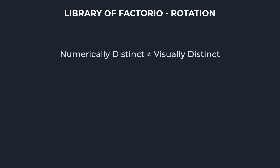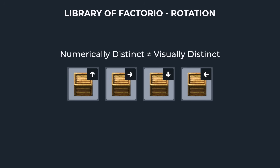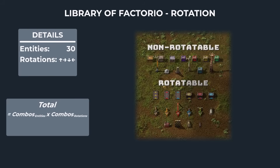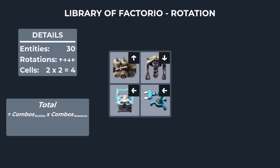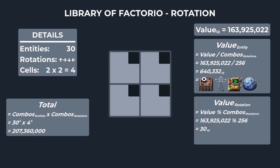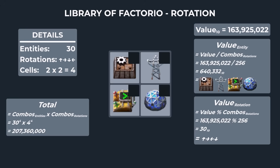One thing you may have realized is this method will generate some duplicates when translated to Factorio. For instance, the wooden chest is not rotatable, so multiple values will produce the same result even though they are numerically distinct. This is also true for the empty cell and any other non-rotatable entity, so there will be some duplicates — but that is a small price to pay to guarantee all possible factories are able to be generated. To expand beyond a single cell, the math is exactly the same; we just need to adjust the total combinations. For a two by two grid, we would have 30 to the 4th total entity combinations and 4 to the 4th total direction combinations. Picking a random value, we extract the entity value and rotation value in the same way, then convert to base 30 for entities and base 4 for directions.